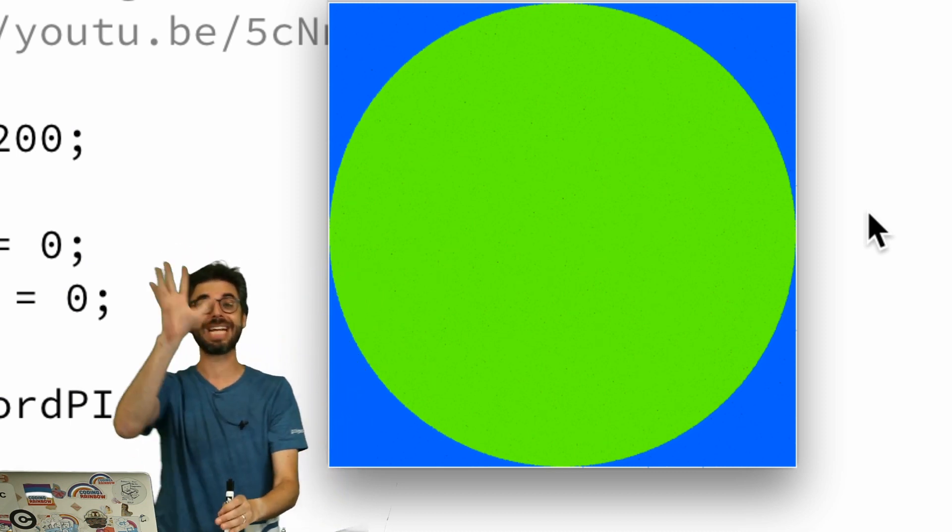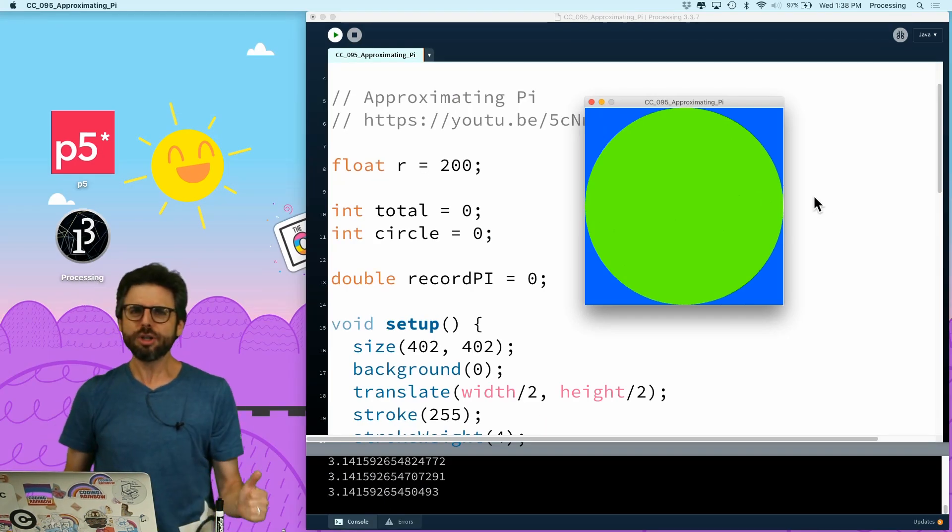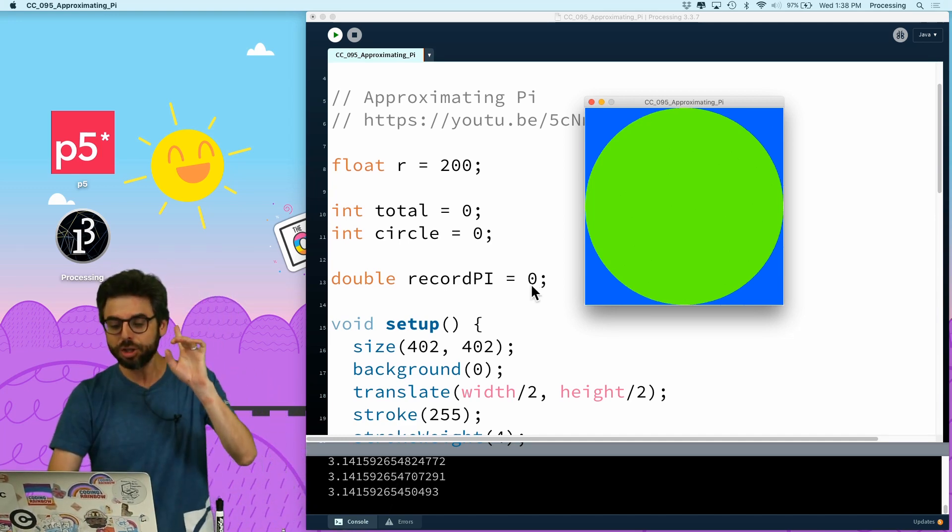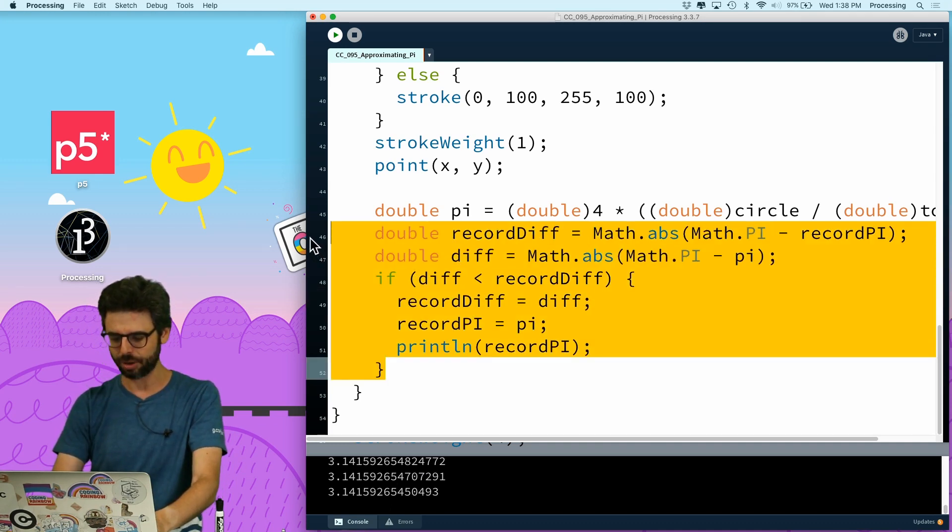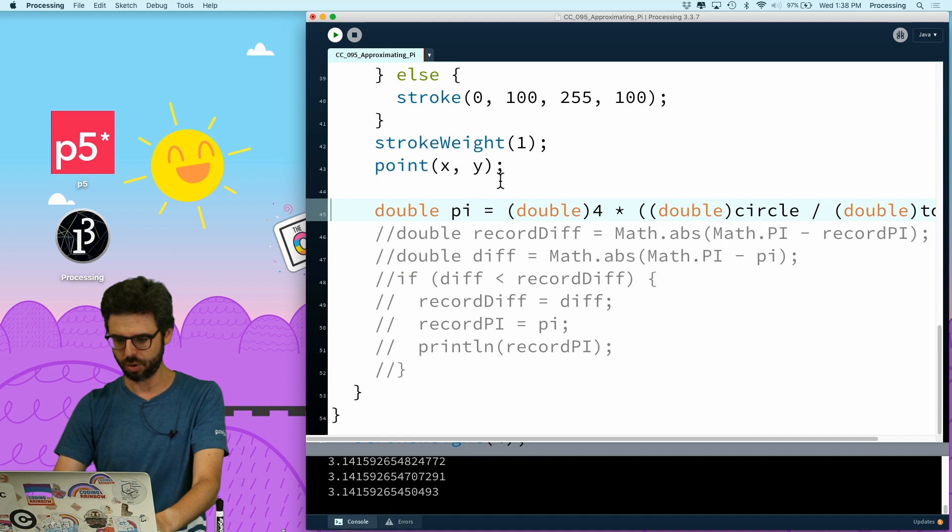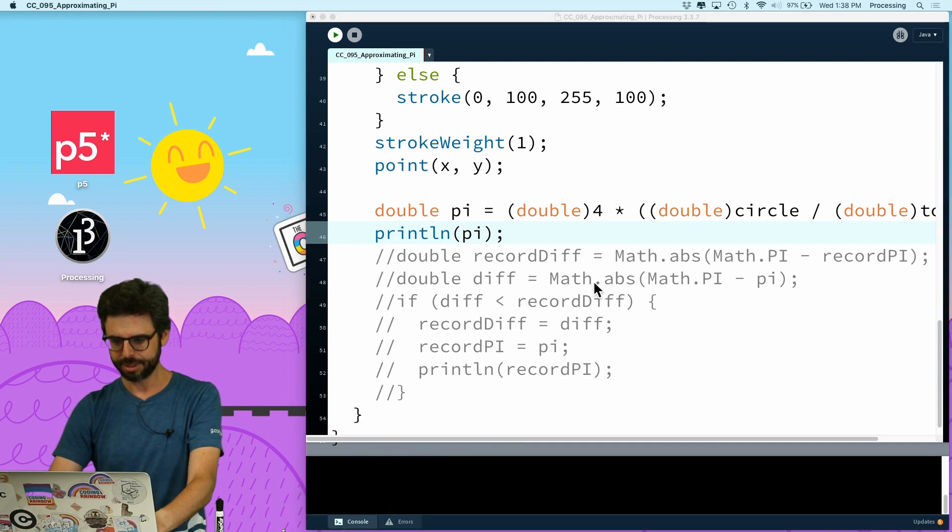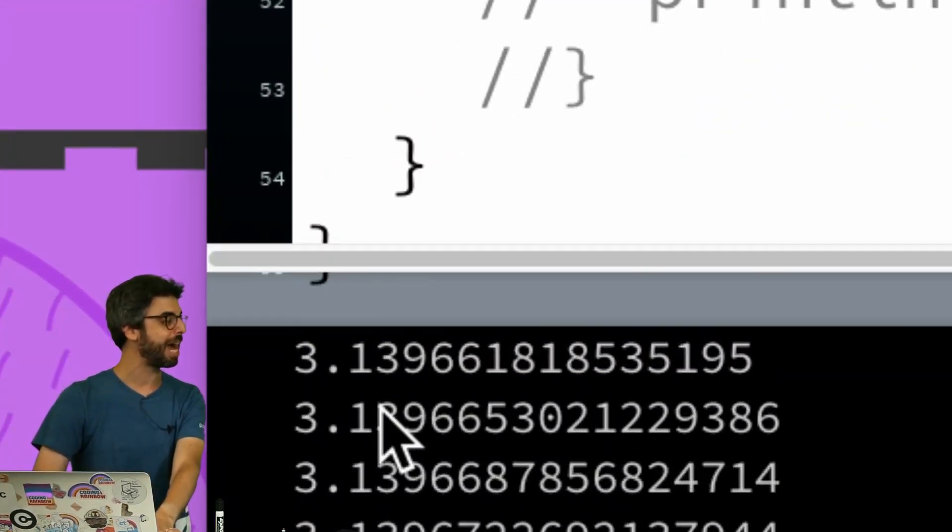Now, one of the comments I got so much on this video was, but you're using pi to calculate pi. Well, no, I'm not. And I want to be clear about this. I'm going to comment out all of these lines of code right here. And I'm going to say print line pi. So there we go, we can see my approximation of pi right here.